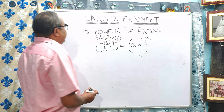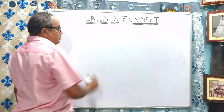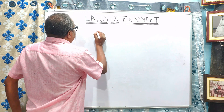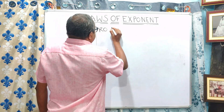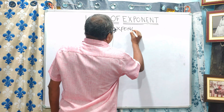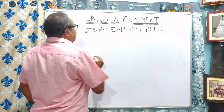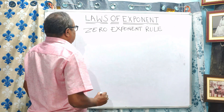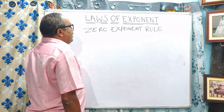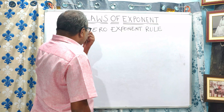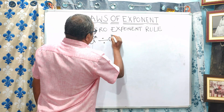Next comes the zero exponent rule. The zero exponent rule says that if you divide an exponent by the same exponent, it is called the zero exponent rule. Let us consider A to the power m divided by A to the power m.